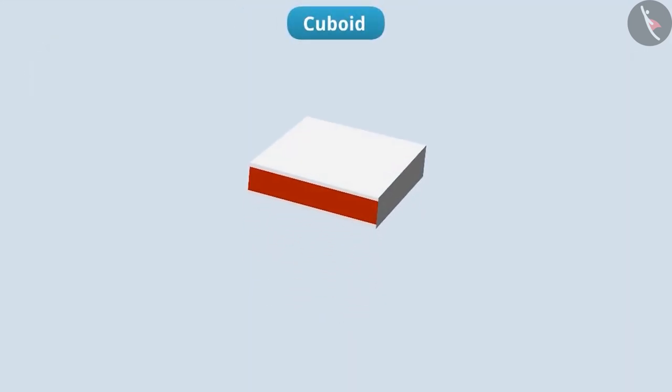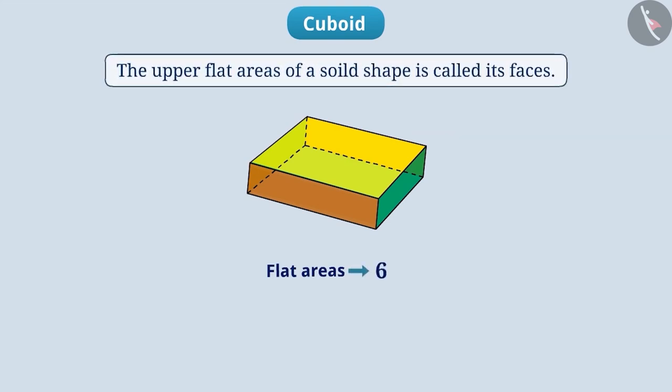Cuboid. Can you tell how many flat areas it is made of? Let us tell you. You can see that, here, one, two, three, four, five and six is flat area. Thus, the box of matches is made up of six flat areas.